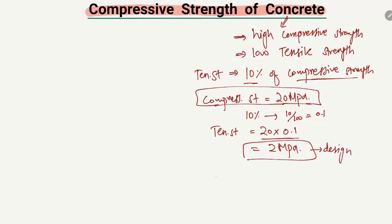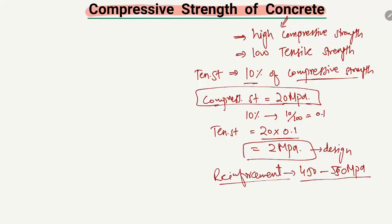For tensile strength, we provide reinforcement steel bars, because reinforcement steel has high tensile strength, usually in the range of 450 to 550 MPa or more, depending on the grade of steel. So reinforcement has high tensile strength while concrete has low tensile strength but high compressive strength. That's why when there are high tensile stresses, we provide reinforcement bars to increase the tensile capacity of the structural member.